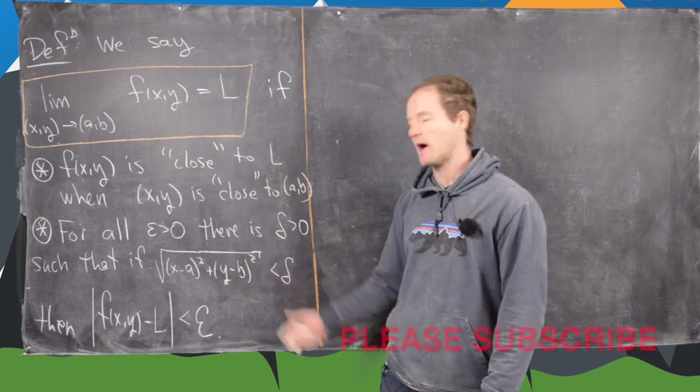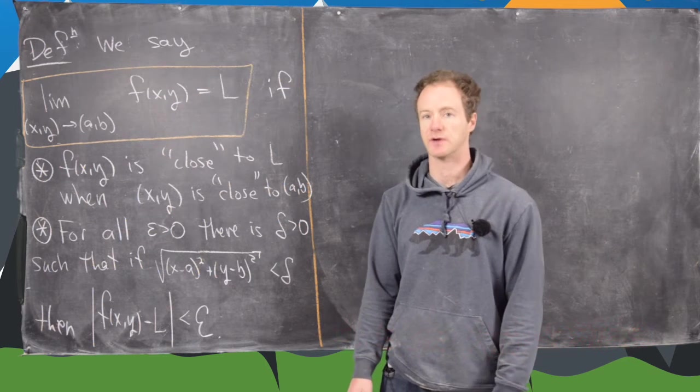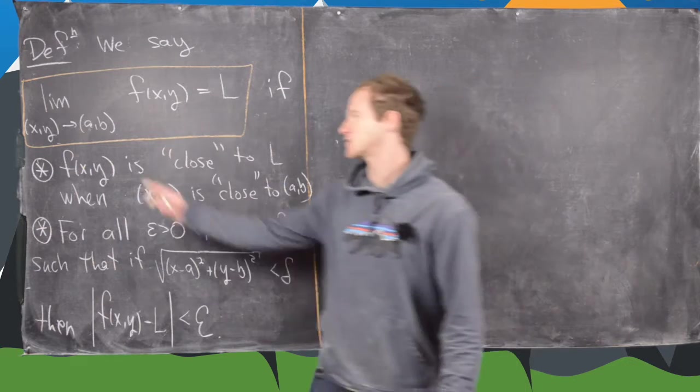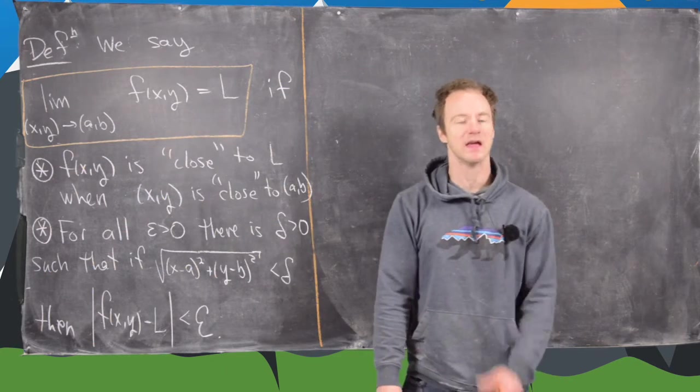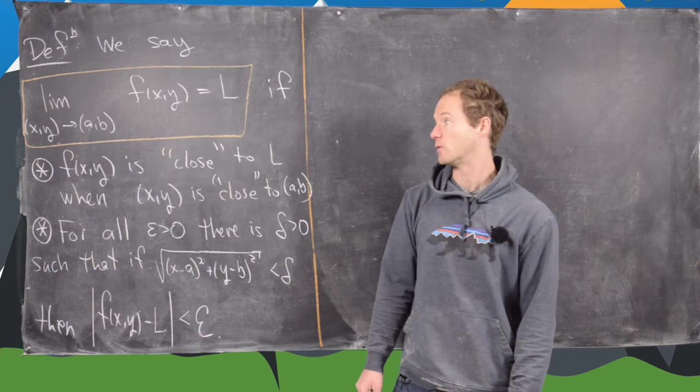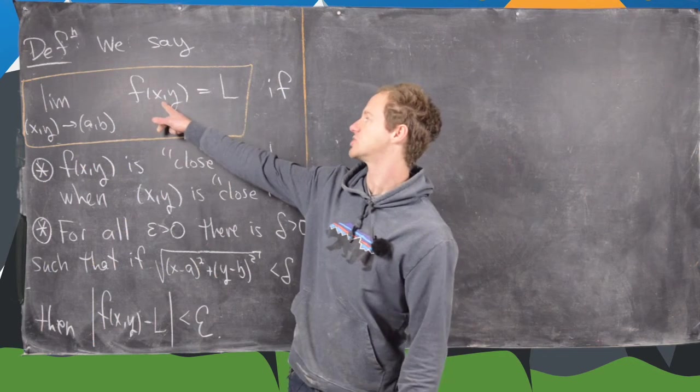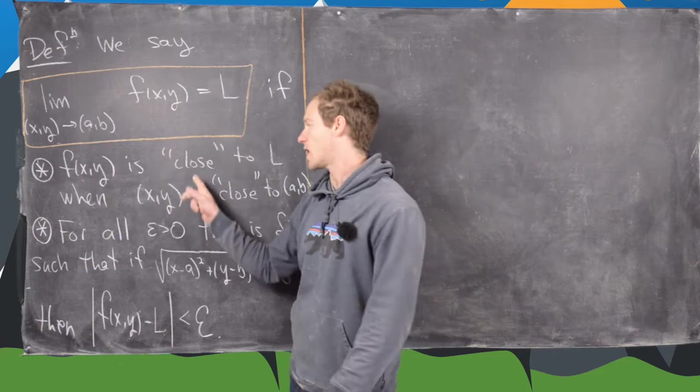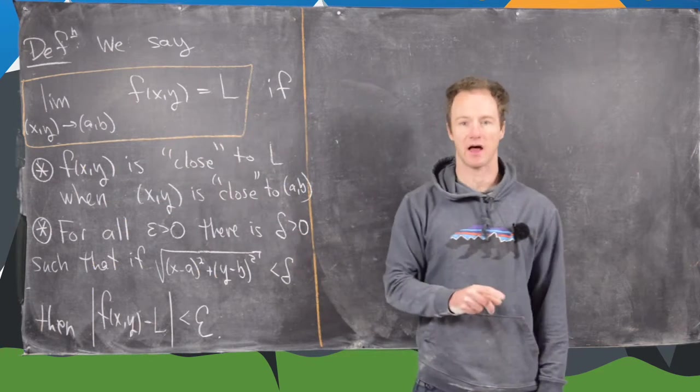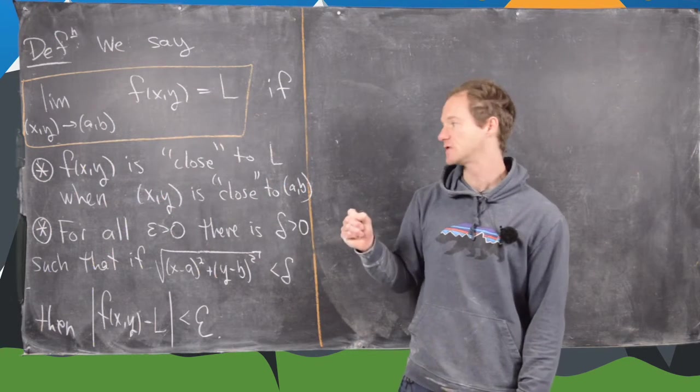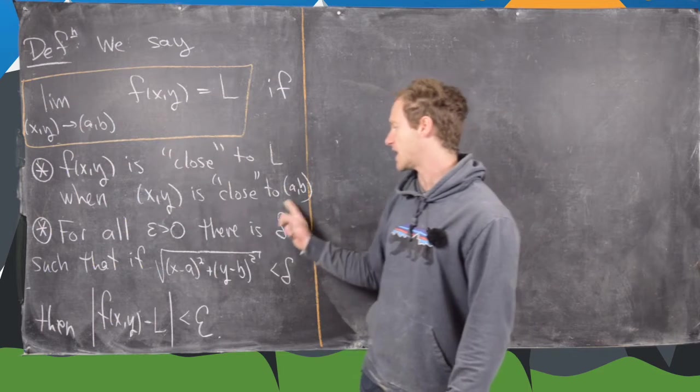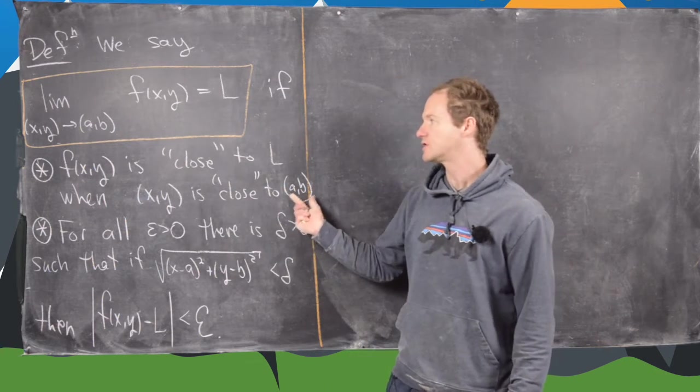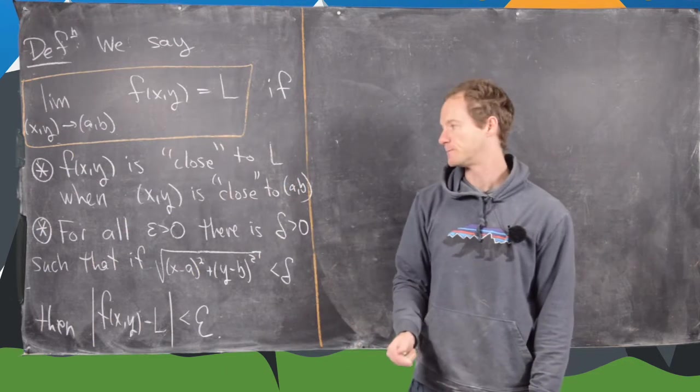This one, which is the proper one, is maybe mostly used for an advanced calculus or a real analysis type class. So we're going to say that the limit as XY approaches AB of this function f of XY equals L if f of XY is close to L when XY is close to AB. In other words, the input of the function is close to the value that you're taking the limit to.